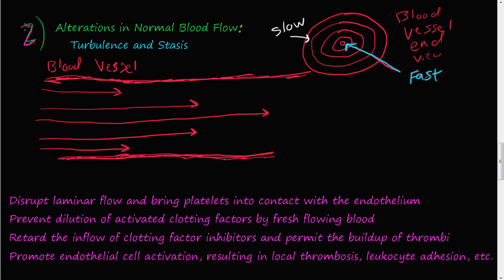Number two is alterations in normal blood flow, and there's two parts: turbulence and stasis. So first let's talk about turbulence, and first we need to talk about, this is a blood vessel, we need to talk about normal physiological blood flow.